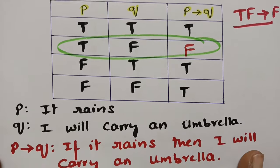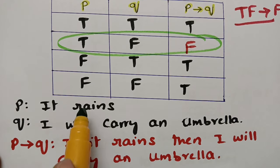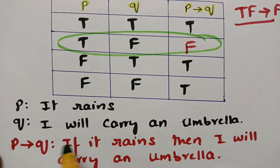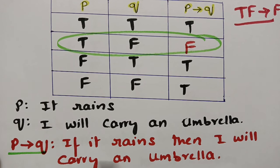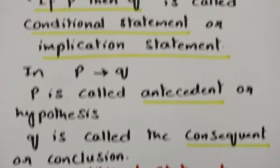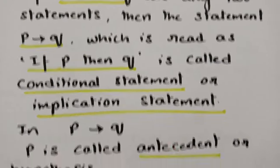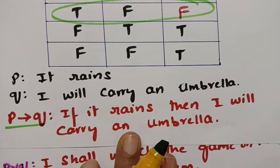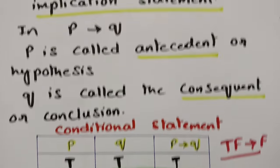Example: P is the statement 'it rains,' Q is the statement 'I will carry an umbrella.' For P implies Q: 'if it rains, then I will carry an umbrella.' This is the definition, the truth table, and the example for the conditional statement.